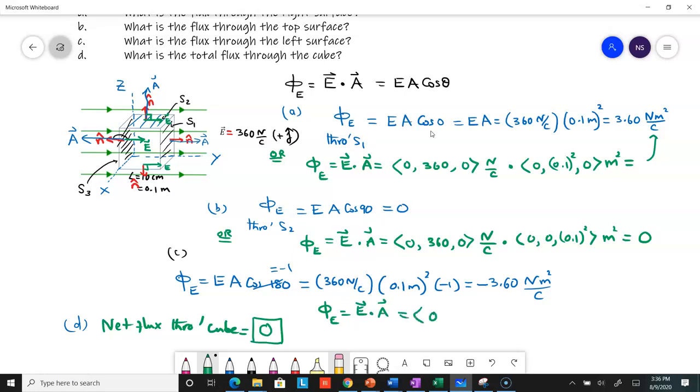Here your E is the same: (0, 360, 0) newtons per Coulomb dotted with the area vector that points to the left, which is in the negative y direction.